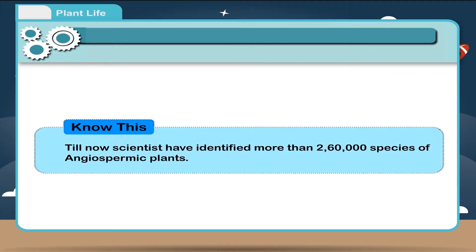Know this. Till now, scientists have identified more than 260,000 species of angiospermic plants.